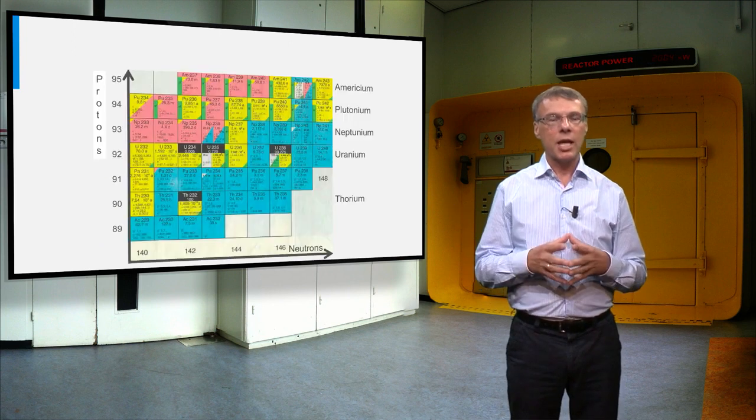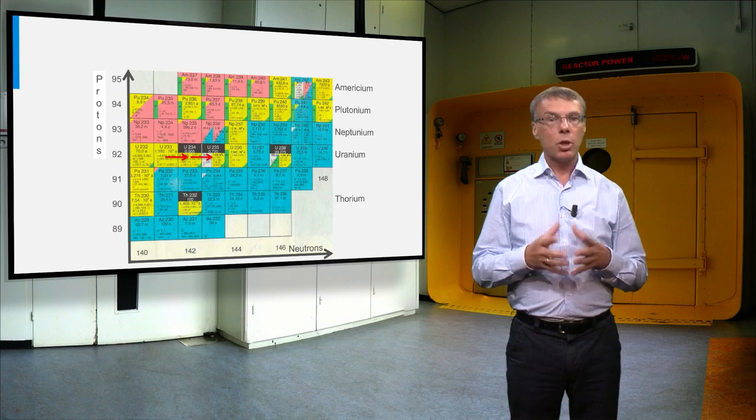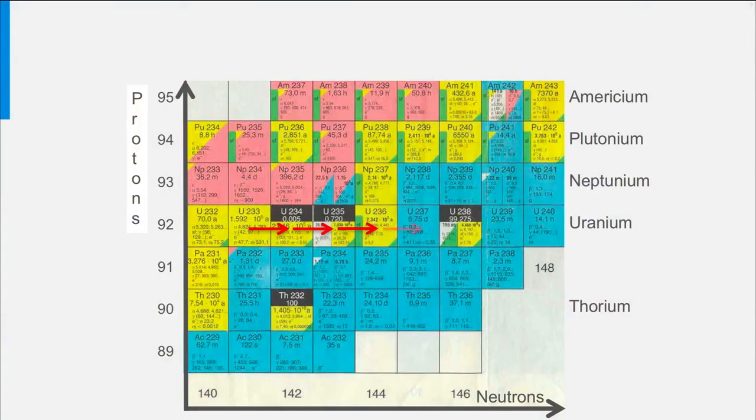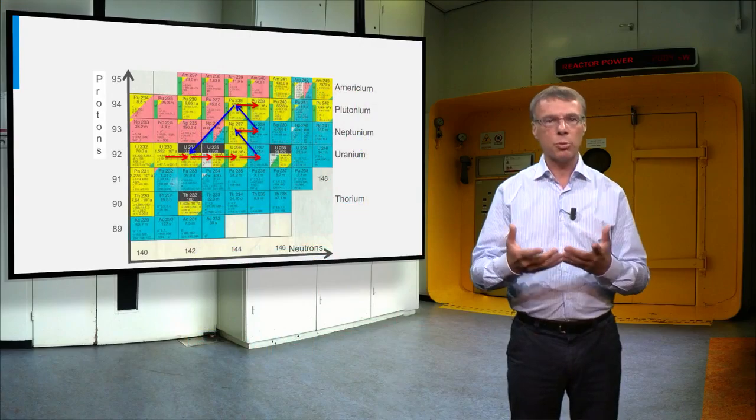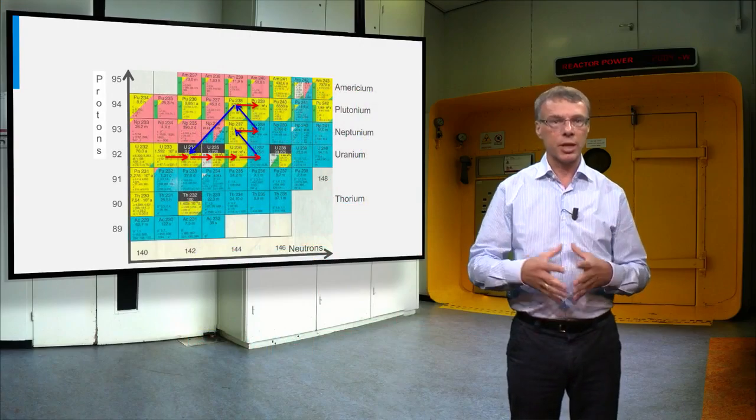The reason for this can easily be seen in this plot. Because we start with thorium-232 as a breed material and uranium-233 as a fissile material, we need four neutron capture reactions before we produce neptunium and plutonium and other actinides. And this means these actinides are produced in much smaller quantities than in a light water reactor.